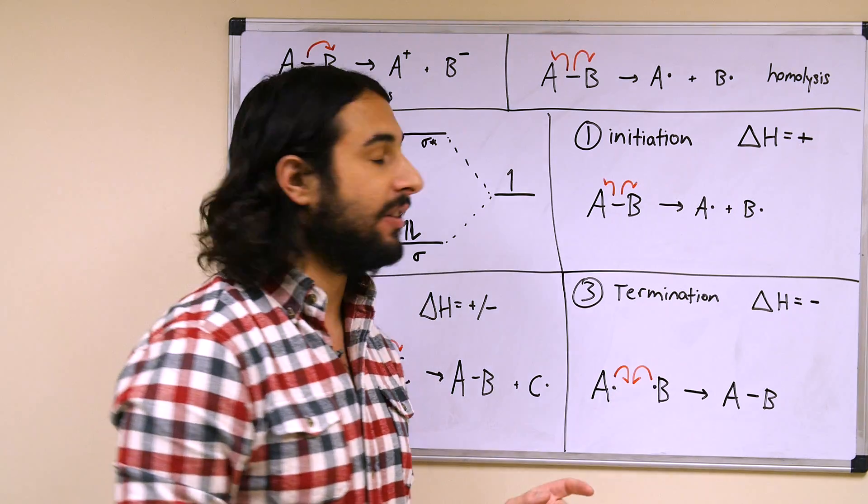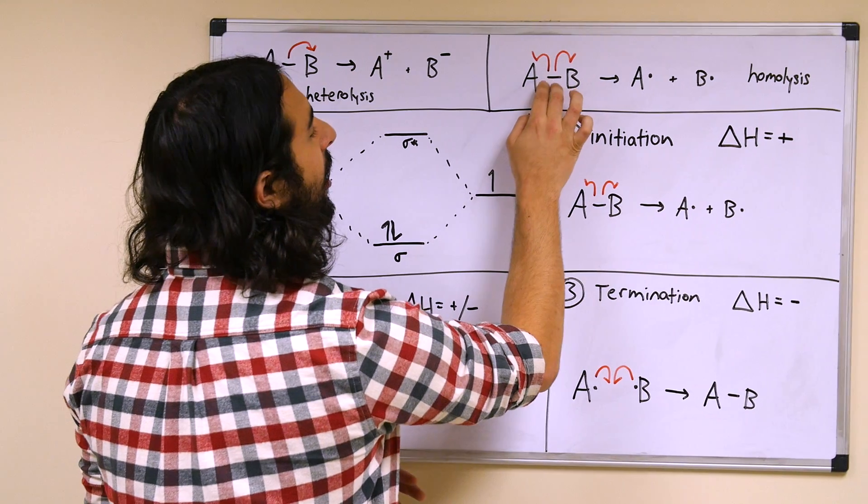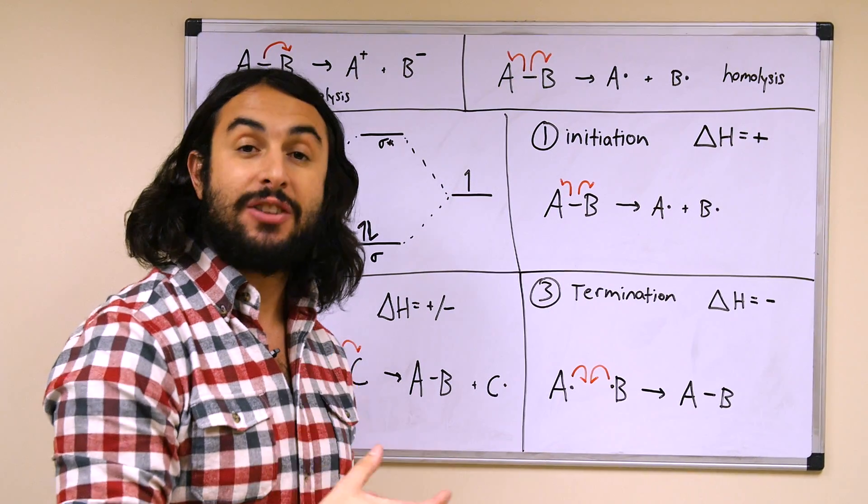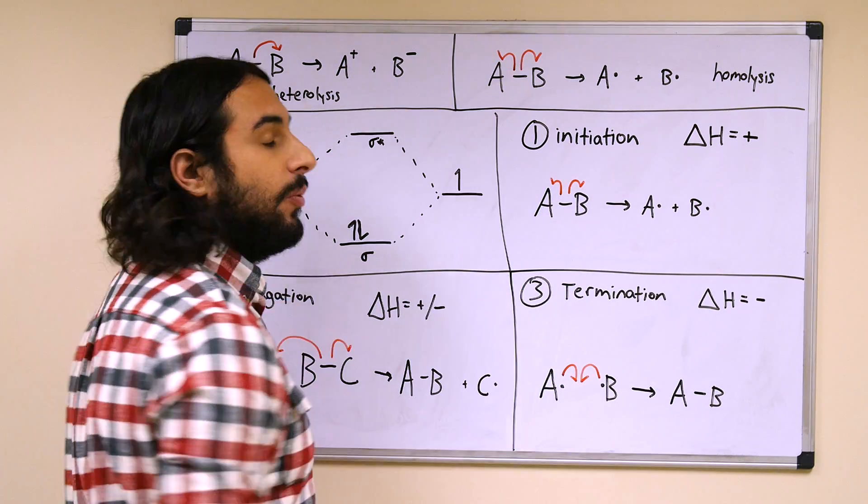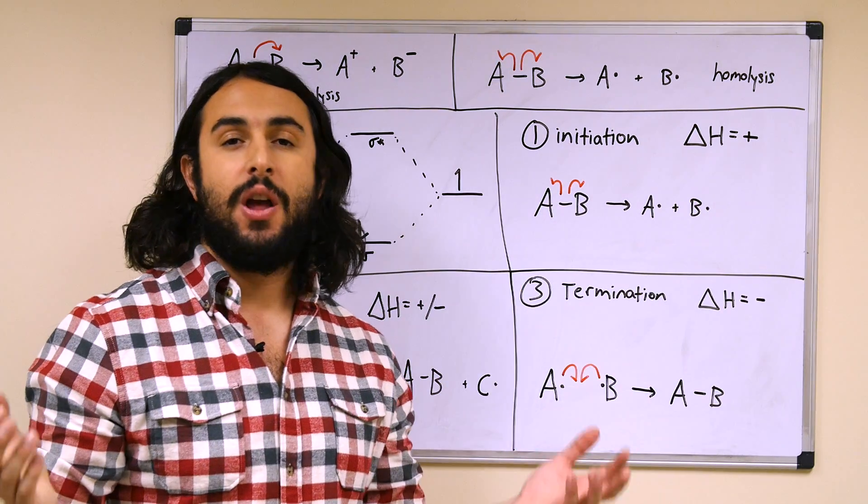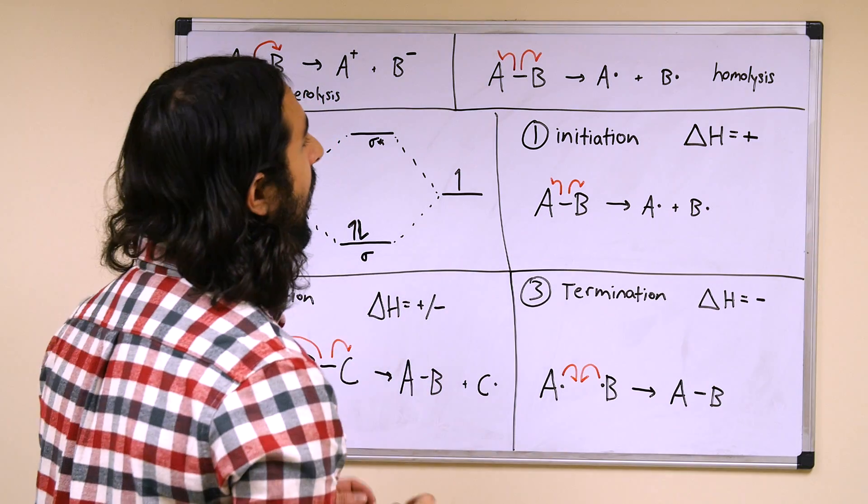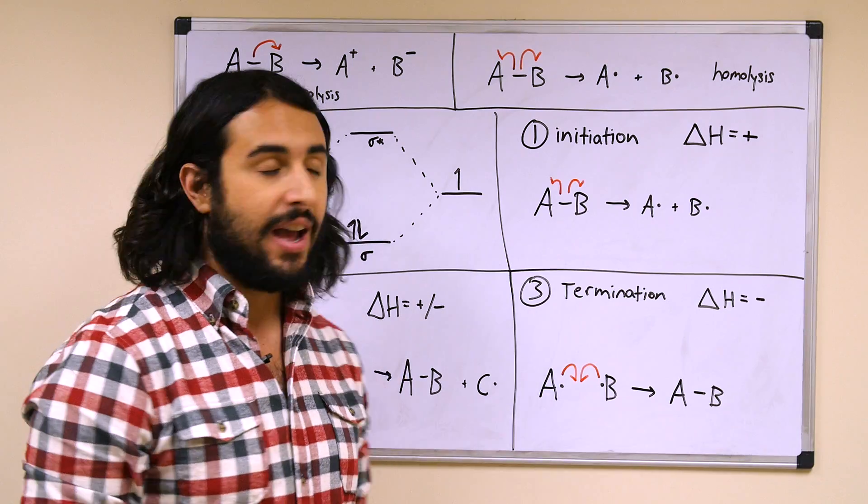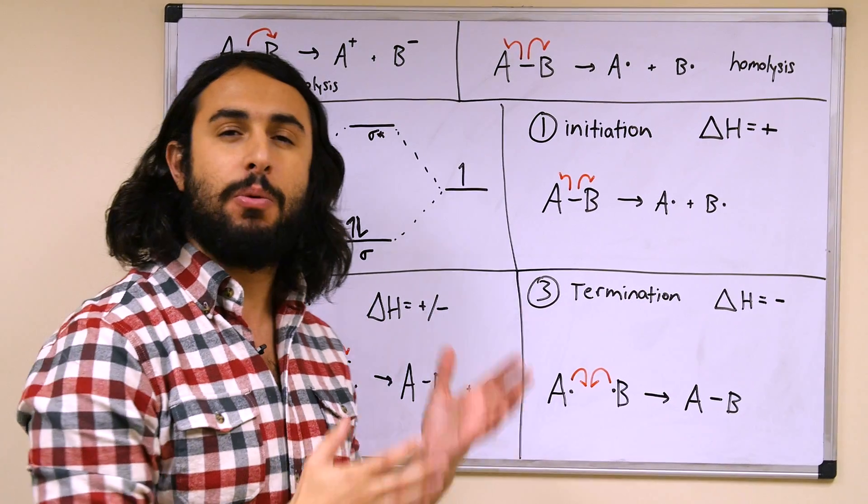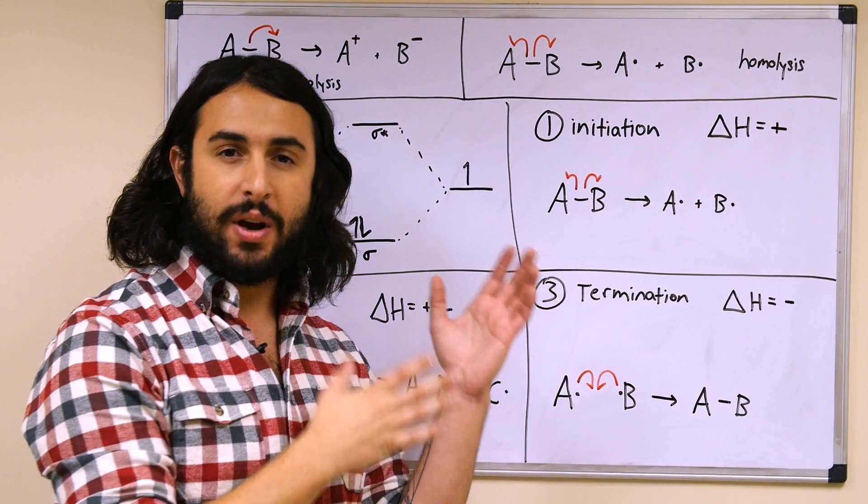But we can also have homolytic bond cleavage, that would be a case where the two electrons in the covalent bond—one would stay with one atom and then the other would stay with the other atom, sort of the reversal of the formation of a covalent bond. And so that would leave us with radicals.